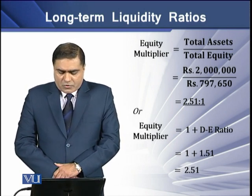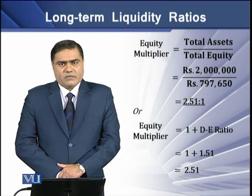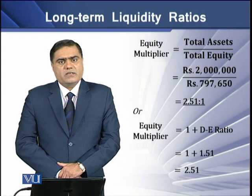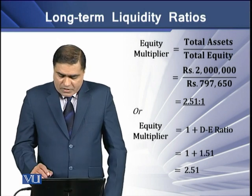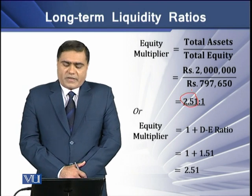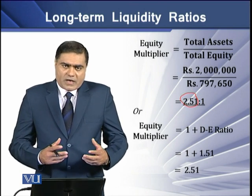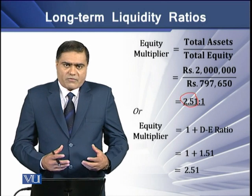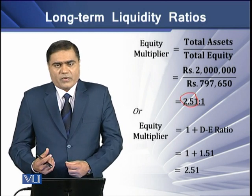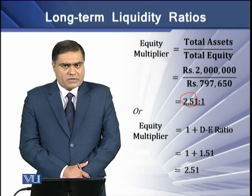If we have total assets of 2 million and total equity of 0.797 million and we divide total assets by total equity, we get a ratio of 2.51. This means that an amount of 2.51 for every 1 rupee of equity has been invested in the total assets of the business.